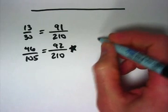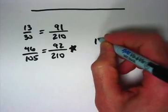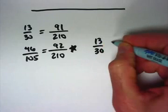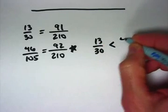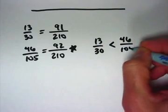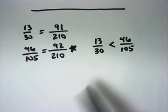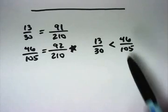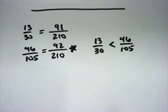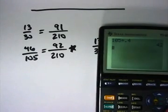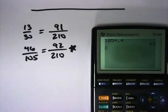So we would write with inequality notation that 13/30 is less than 46/105. Therefore, on a number line, the 13/30 would be to the left of 46/105. They are pretty close together, as you can see. What are they as decimals? And this illustrates another way to compare them.